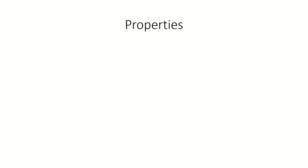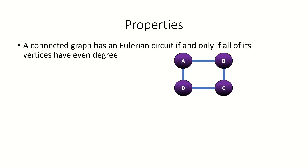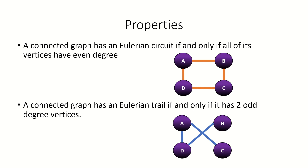Let's move on to analyzing two major properties of Eulerian circuits and trails. It has been proven that a connected graph has an Eulerian circuit if and only if all of its vertices have even degree. A graph has an Eulerian trail if and only if it has exactly two odd degree vertices. Remember that we're referring to open Eulerian trails as Eulerian trails in this video. Such graphs are known as semi-Eulerian graphs.